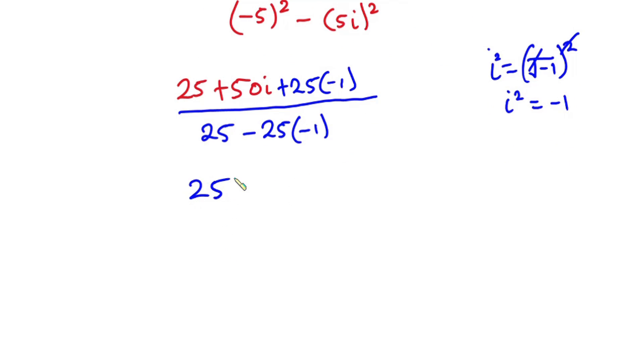So we have 25 plus 50i minus 25 all over we have negative 25 times negative 1, that is positive 25. So straight away, you can see that this positive 25 will cancel this negative 25.